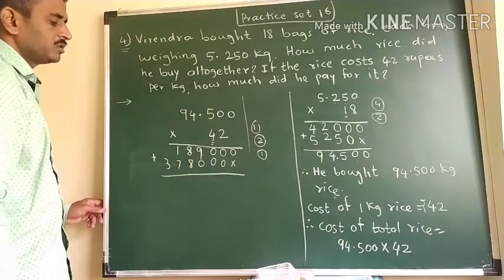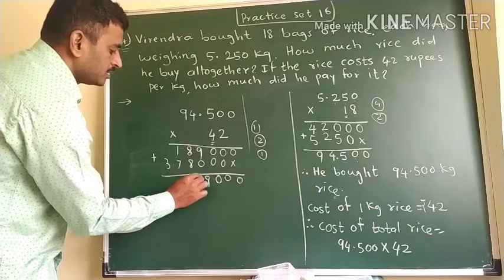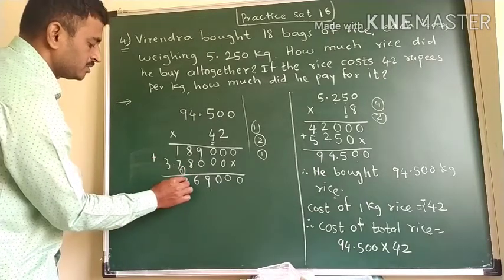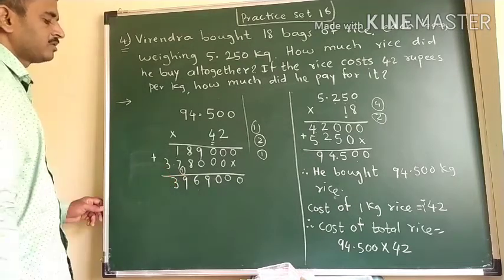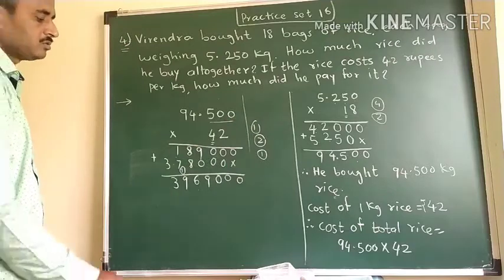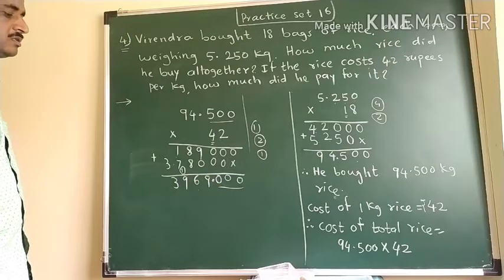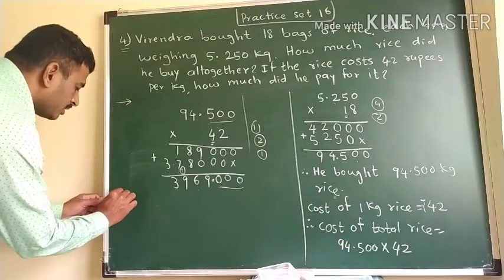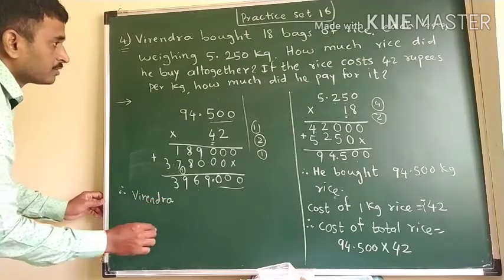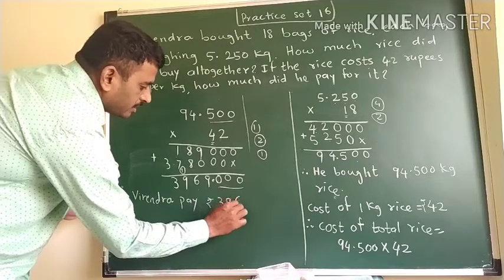Now we add both partial products: 0 plus 0 is 0, 0 plus 0 is 0, 9 plus 0 is 9, 8 plus 8 is 16 — 1 is the carry; 1 plus 7 is 8, 8 plus 1 is 9 — 3 is the carry. In the question there are 3 decimal places, so we leave 3 decimal places in the answer and put the decimal point. Therefore, Virendra paid 3969 rupees for all 18 bags of rice.